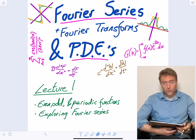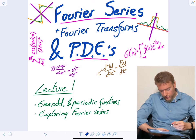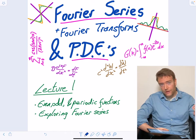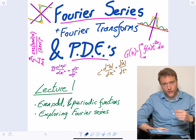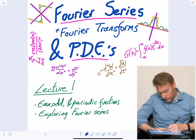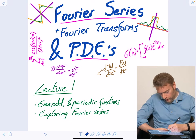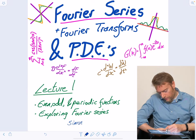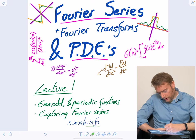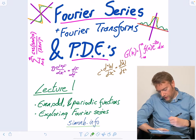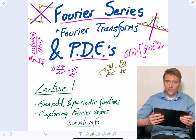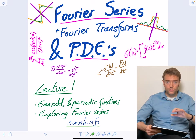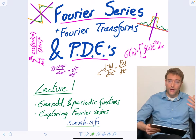Along with this course goes some notes that explain things in a slightly different way and contain a lot of the equations and examples that we'll look at. They are available online in a bunch of different places, but if you have trouble finding them, go to simonb.info — that is where you'll always be able to find the notes that go with this course.